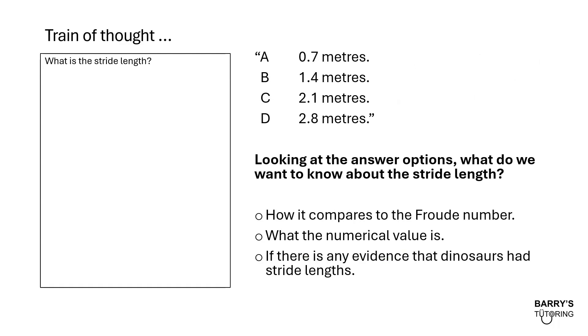Looking at the answer options, we have 0.7 meters, 1.4 meters, 2.1 meters and 2.8 meters. What do you think they want us to know about the stride length? Is it asking us to compare it to the Froude number? Is it asking what the numerical value is? Is it asking if there's any evidence that dinosaurs had stride lengths? What do you think?